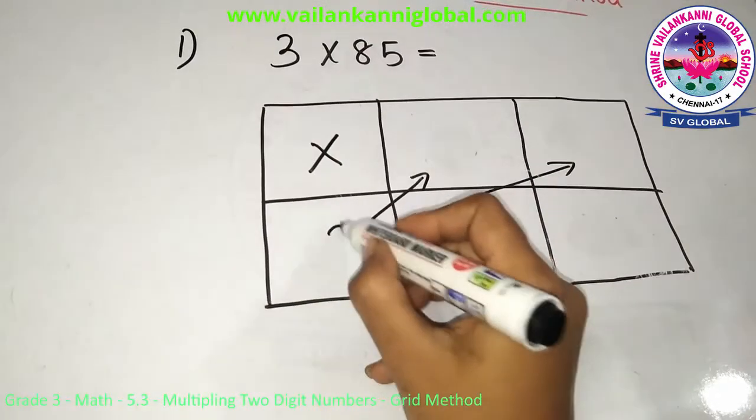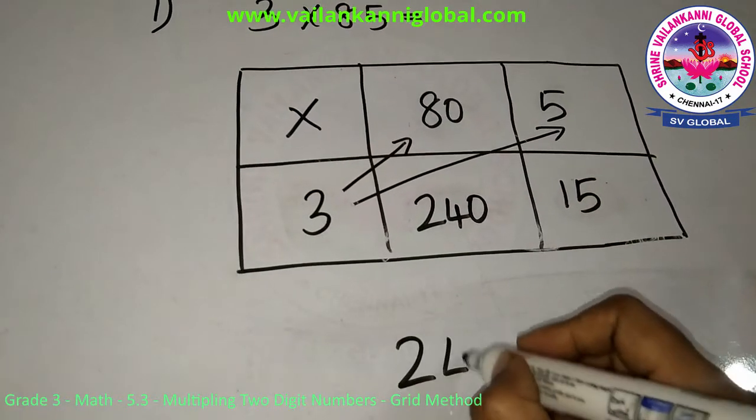So one more sum. 3 into 85. 3 will go here. 85 I will split it as 80 and 5. So 3 times 8 is 24 and this 0 I will add, making 240. 3 times 5 is 15. So the final answer is 240 plus 15, which is 255.